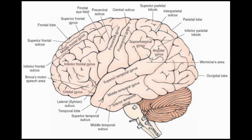This is the superolateral surface of the cerebrum. The gyri usually have the names of the lobes and the sulci usually have the names of the gyri. In the frontal lobe you can see the frontal gyrus — there is a superior, medial, and inferior one, divided by the superior and inferior frontal sulci. Behind that you can see the precentral gyrus, which is the motor cortex, and the postcentral gyrus, which is the sensory cortex, divided by the central sulcus.